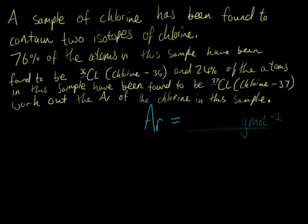And 24% of the atoms in the sample have been found to be chlorine 37. Work out the AR of the chlorine in this sample. Looking at this question, the first thing I'm looking out for is the isotopes and the percentage abundances of those isotopes provided. And I can see that there's two isotopes only and I'm going to group these.